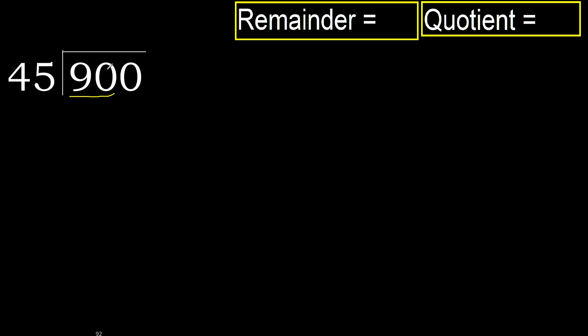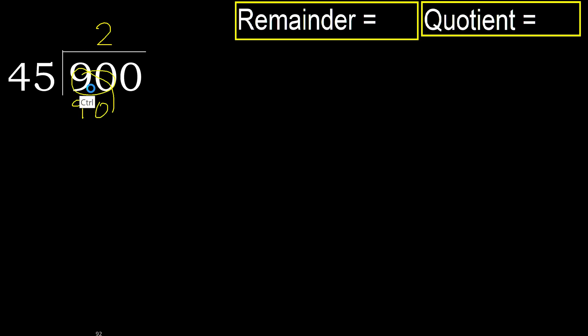Therefore, with 90: 45 multiplied by which number is nearest to 90, but not greater? 45 multiplied by 3 is greater, so multiplied by 2 — 90 is not greater.